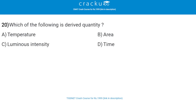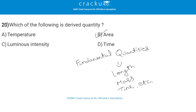Next: which of the following is a derived quantity? The correct answer is area, that is option B. Derived quantities are the quantities that can be derived from the fundamental quantities, such as length, mass, time, and so on.